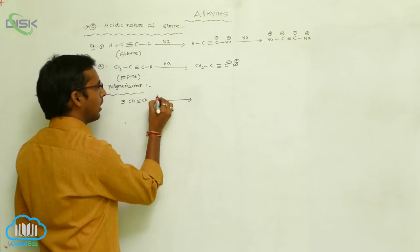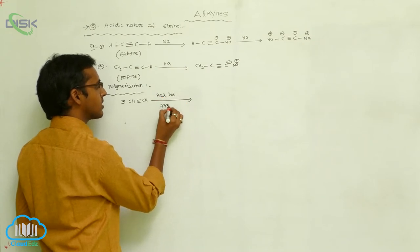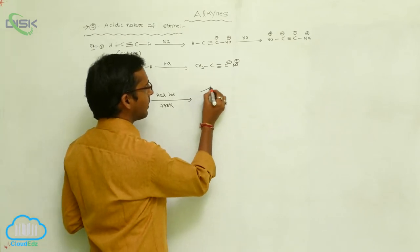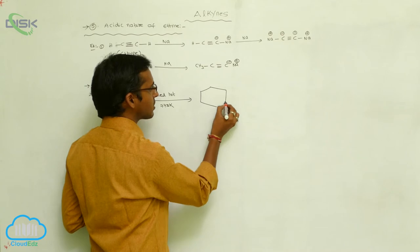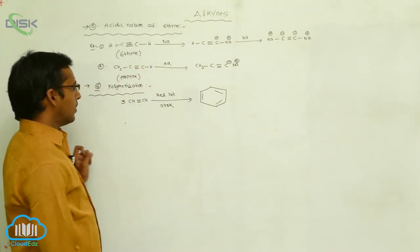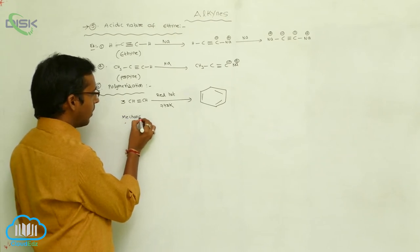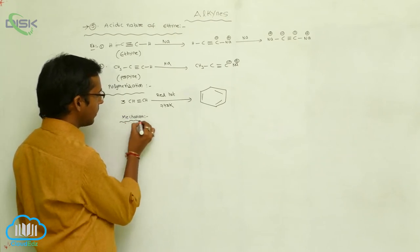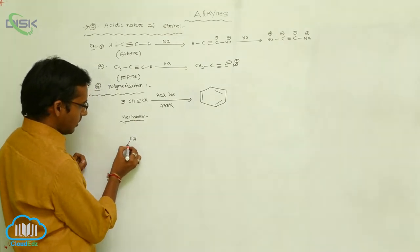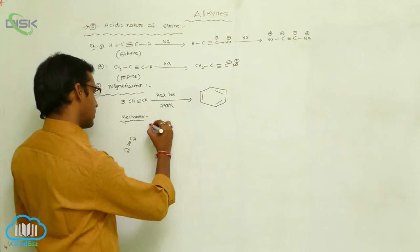In the presence of red hot conditions at 773 Kelvin temperature, three moles of acetylene give an aromatic compound — benzene is formed. Let's see the mechanism. Acetylene is represented as CH triple bond CH, and three such molecules are involved.